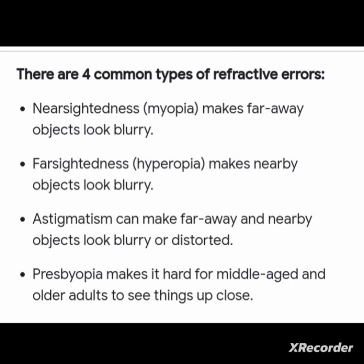In case of astigmatism, the person can see far away and nearby objects but they will look blurry and distorted.